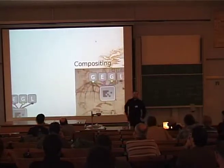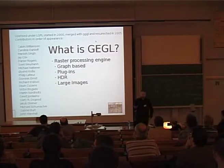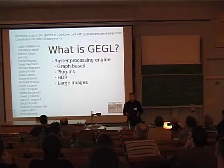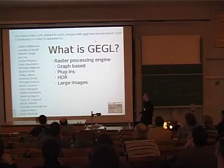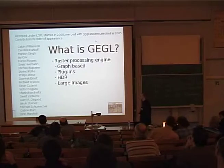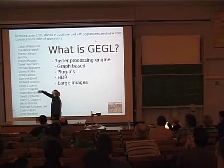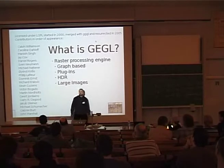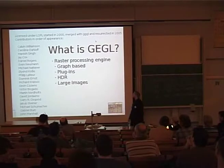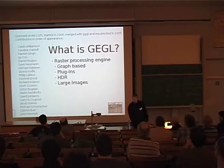GEGL is a raster processing engine. It's graph-based, has plug-ins, supports large images. It's a project starting in the year 2000 which was dormant for a while. On the left side we have contributors to the project in order of commits in the chain. The project is getting quite healthy — my name was the final name added in June of last year, so all the names below have come since June 2006. That's impressive — many people saw something happening and wanted to work on it.